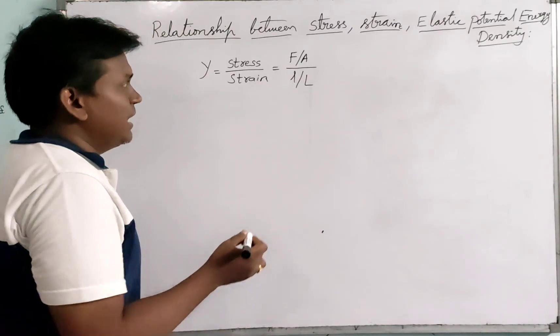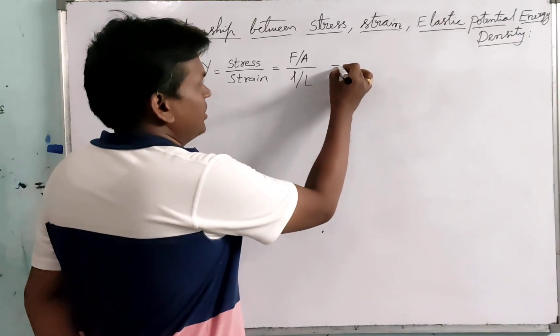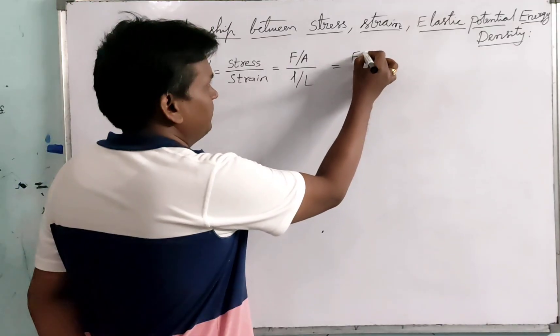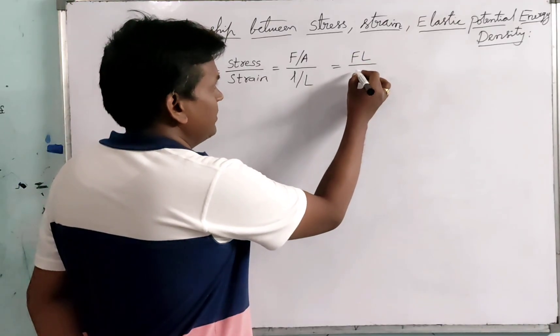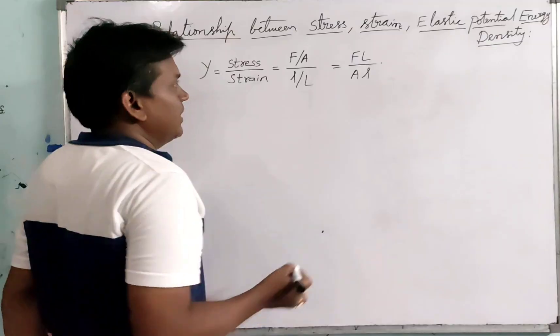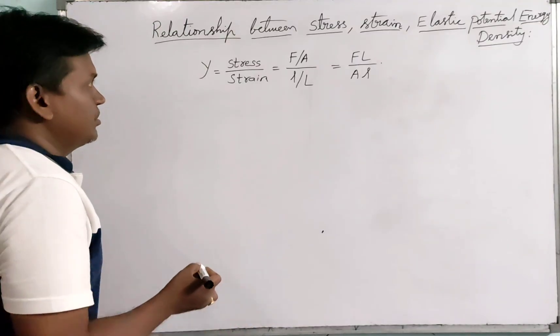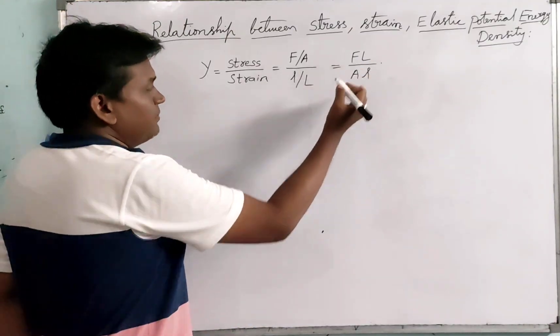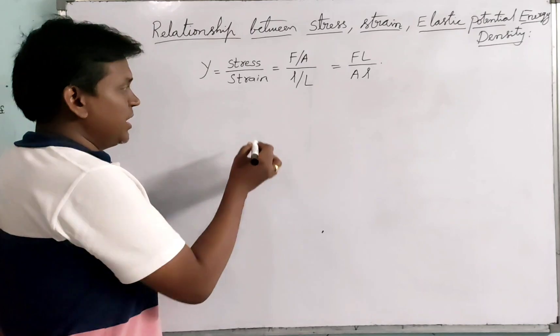L by capital L. This can be written as F capital L by A into small L. So Y equals F capital L by A into small L.